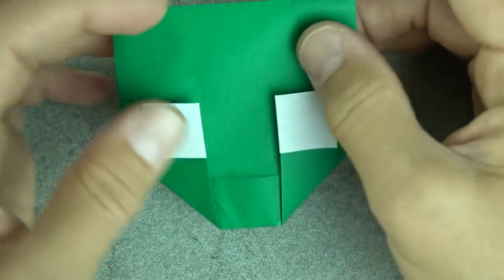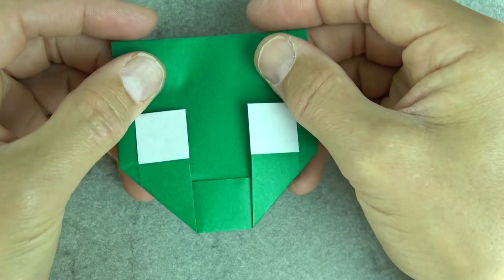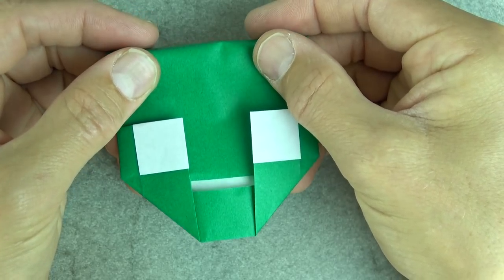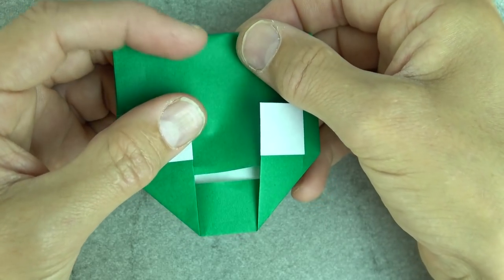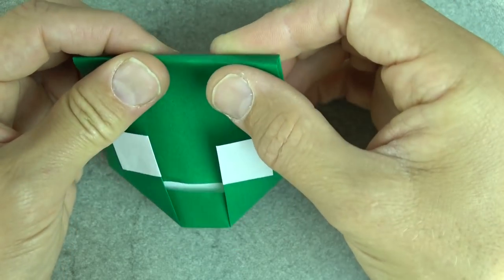So here is the alien with the closed mouth. And to open its mouth, you just slide the front layer up however much you want the mouth to open. And re-flatten it.